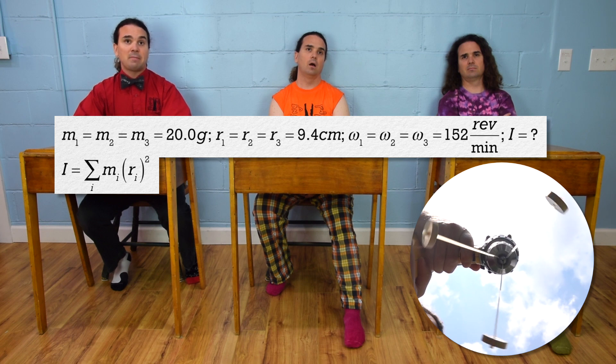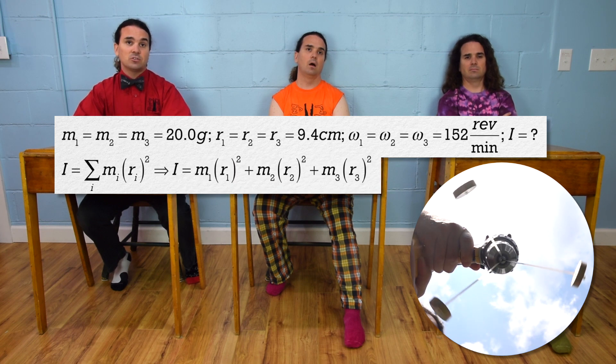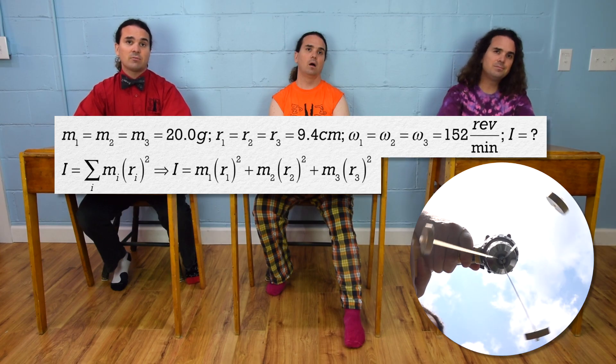So, moment of inertia equals mass 1 times r1 squared, plus mass 2 times r2 squared, plus mass 3 times r3 squared.